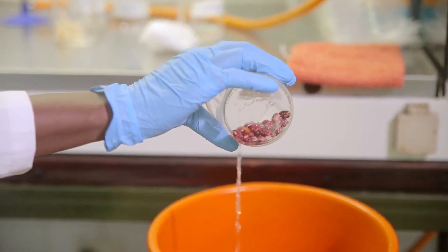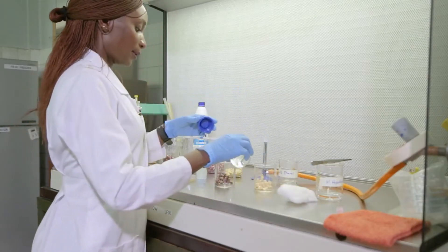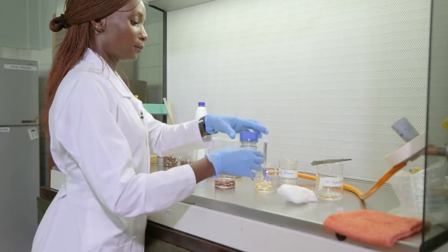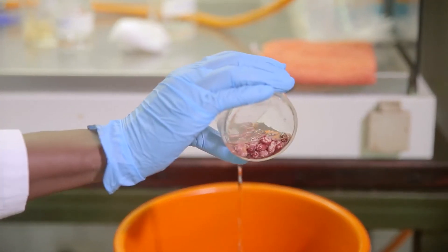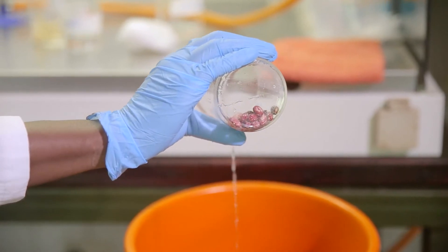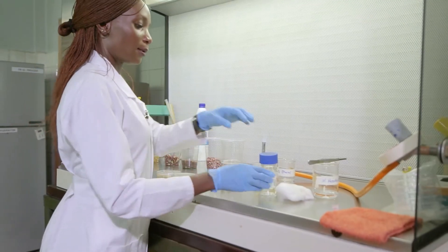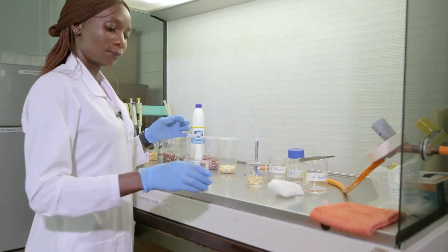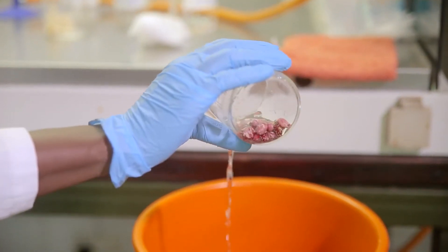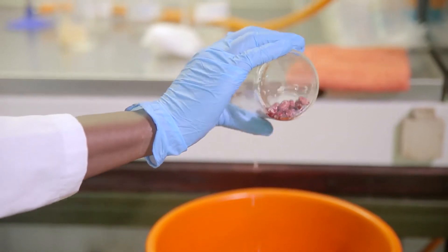We pour off the hypochlorite that we put in the beans. Wash it off with sterile water. Our aim here is to disinfect the surface of the seeds, just in case we have any fungi on the surface of the seeds.